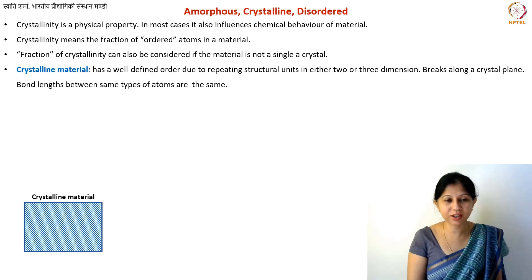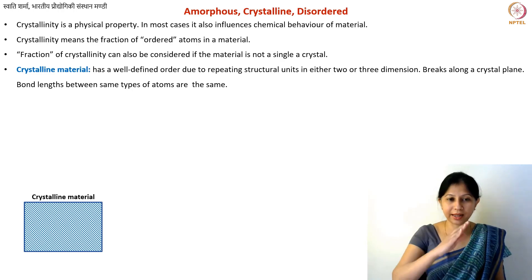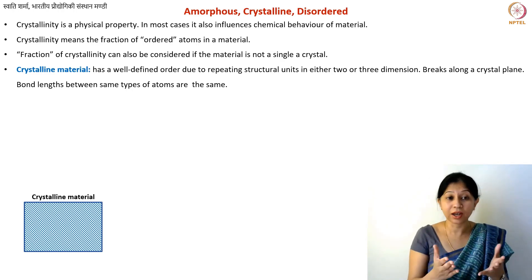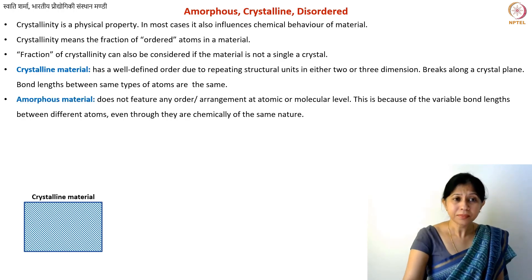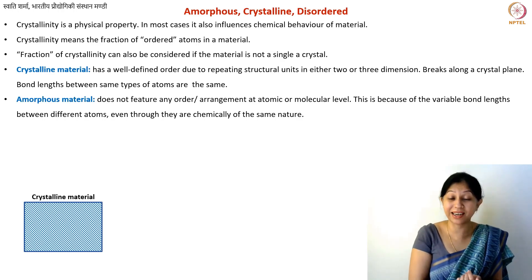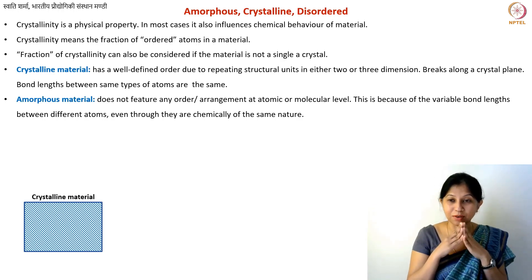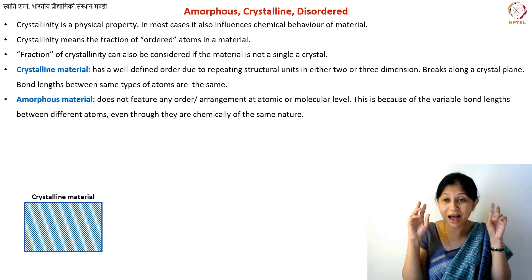A crystalline material has well-defined order. In the picture I have shown, the lines represent crystal planes — this is like a cross-section of your crystal, with very well-defined and evenly spaced planes. That is your crystal. Now, for amorphous materials, the definitions you've learned typically say the material shatters on breaking, but many things shatter even if they have a polycrystalline structure — a polycrystalline material can be more than 90% crystalline and still shatter.